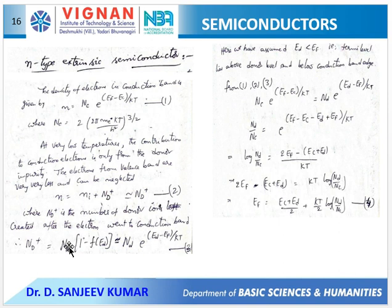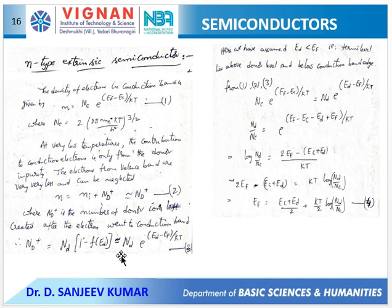Suppose we are doping with N_d number of donor atoms; we consider only those that are ionized. To count the number of ionized atoms — those that have lost an electron — we multiply the probability of losing an electron by the total number of donor atoms, giving us the number of donor ions.